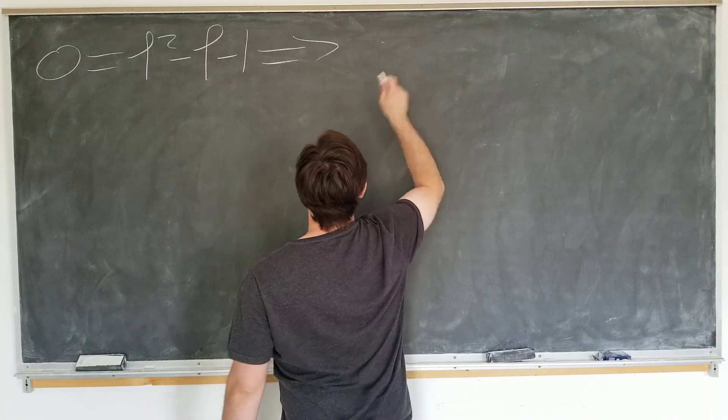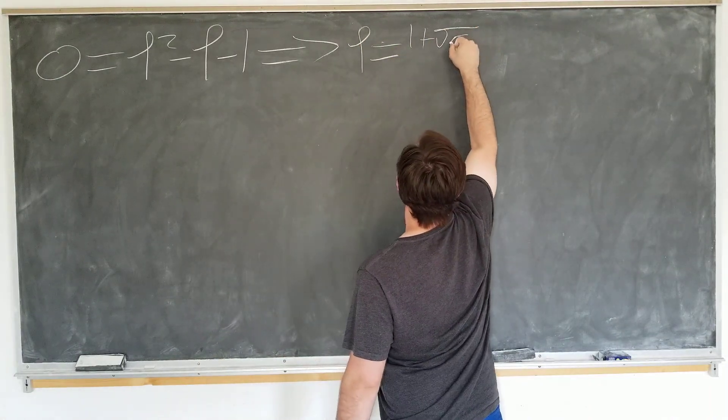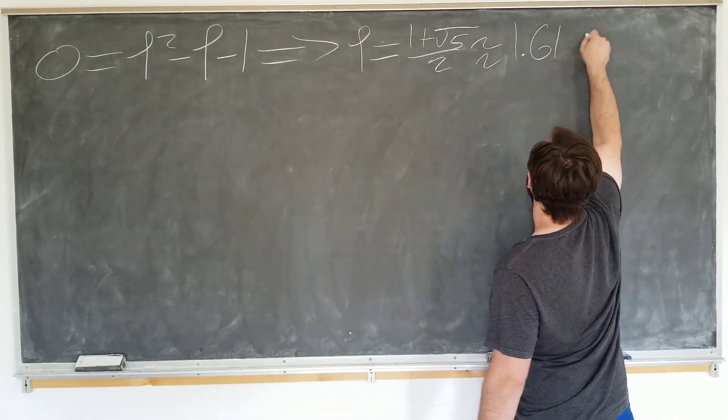Which upon using the quadratic formula tells us that phi is equal to 1 plus the square root of 5 over 2, approximately 1.618.